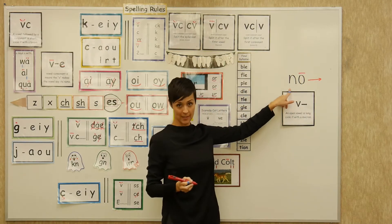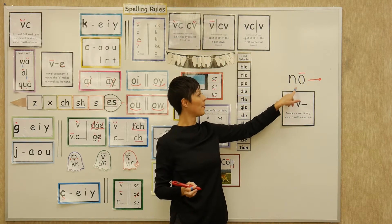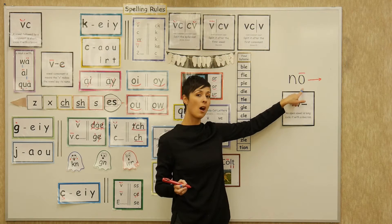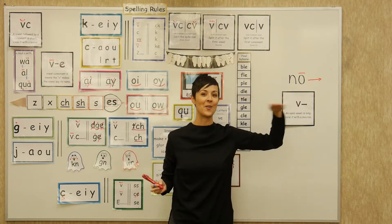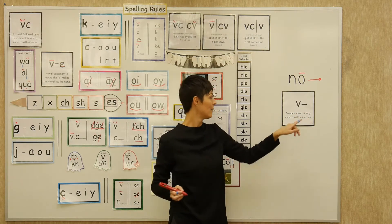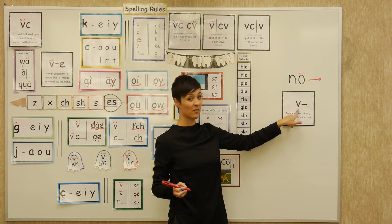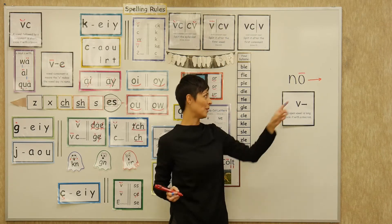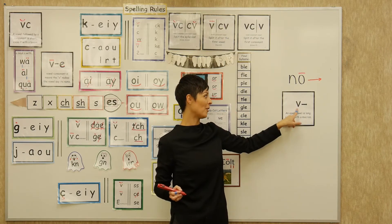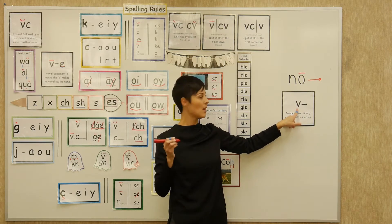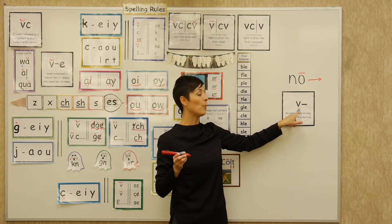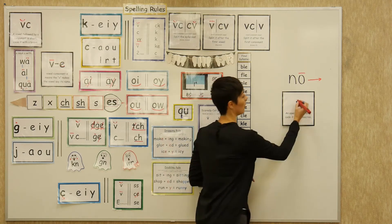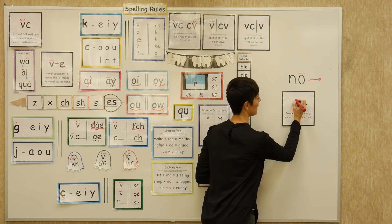And now the rule looks like this: an open vowel is long, code it with a macron. This V also stands for vowel, even though it's not a letter O. So we're going to say the same thing — an open vowel is long, code it with a macron.